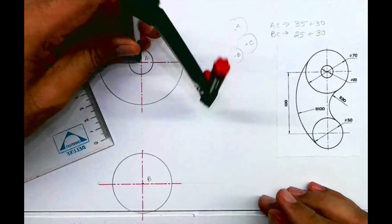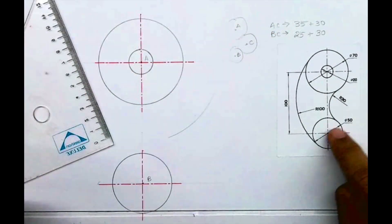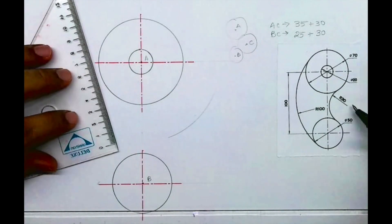From A, I will cut 65, and from B, I will cut 55.